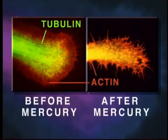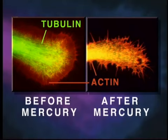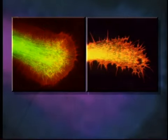Shown here is a neurite growth cone stained specifically for tubulin and actin, before and after mercury exposure. Note that the mercury has caused disintegration of tubulin microtubule structure.